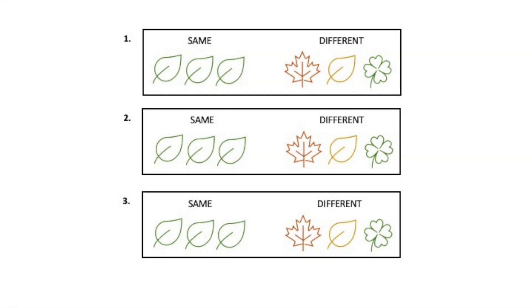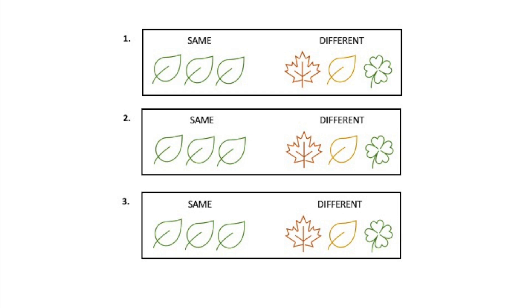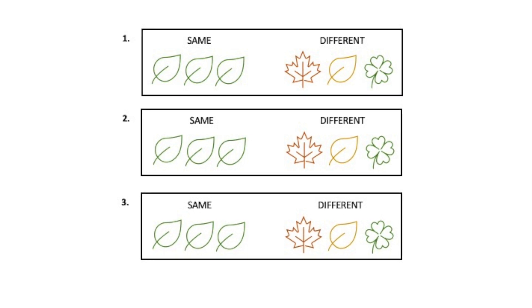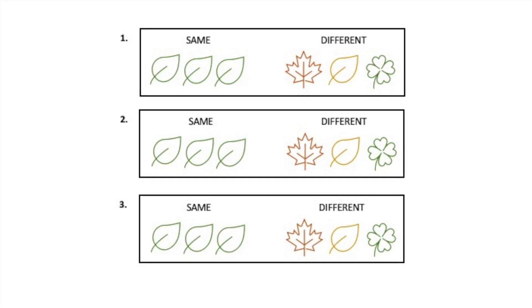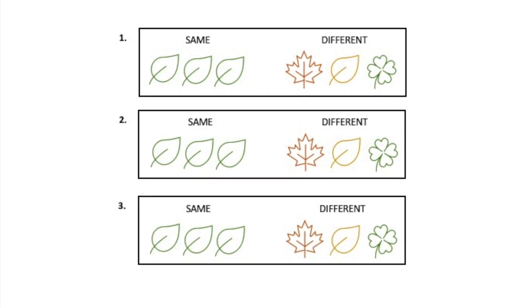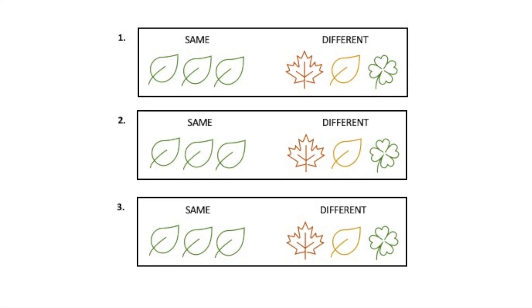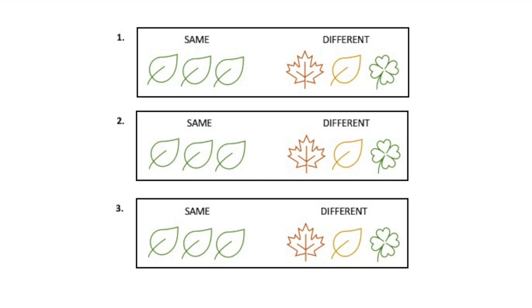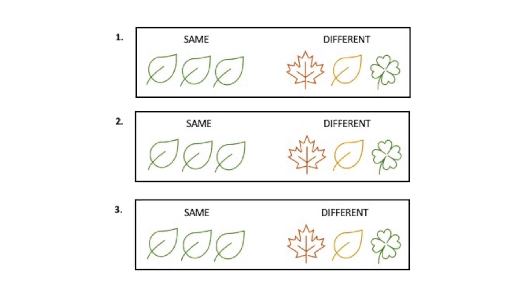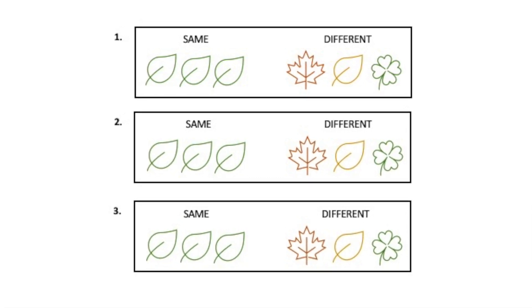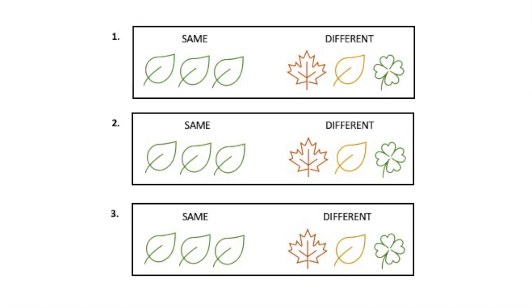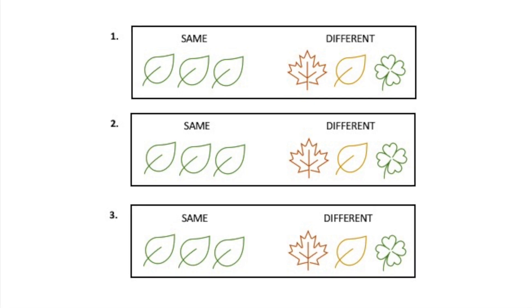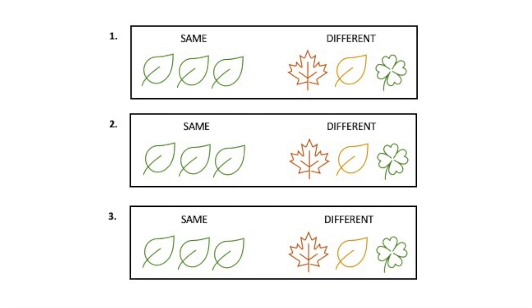What do you hear, number five? You will hear three notes. If you hear the same note three times, color the leaves that are the same. If you hear three notes that are different, color the leaves that are different.